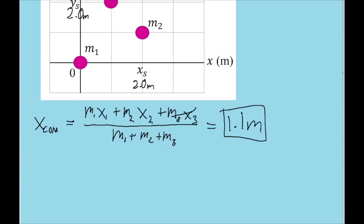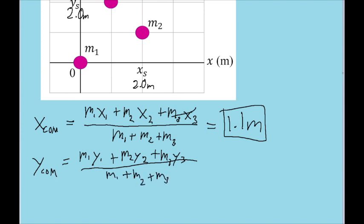Now for the y coordinate, the formula is basically identical, except we use y's instead of x's. So it's m1y1 plus m2y2 plus m3y3, and it's all divided by m1 plus m2 plus m3, the same total mass. And if we plug this into our calculator, we find that the y coordinate of the system's center of mass is 1.3 meters.